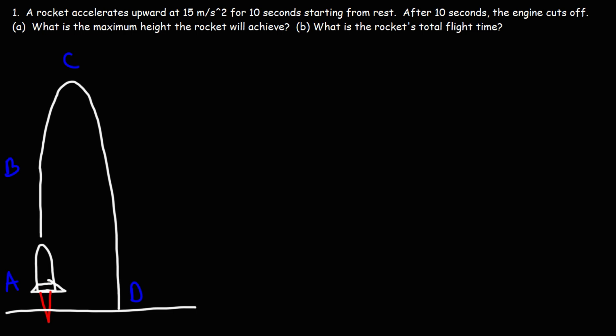At point A, the rocket is starting from rest, which means its vertical velocity is zero. At point C, the rocket's vertical velocity will also be zero because it's no longer going up. Between points A and B, the rocket has an upward acceleration in the y direction of 15 meters per second squared. At point B, when the engine cuts off, the rocket will be in free fall under the influence of gravity, so its acceleration will be negative 9.8 between points B and D.